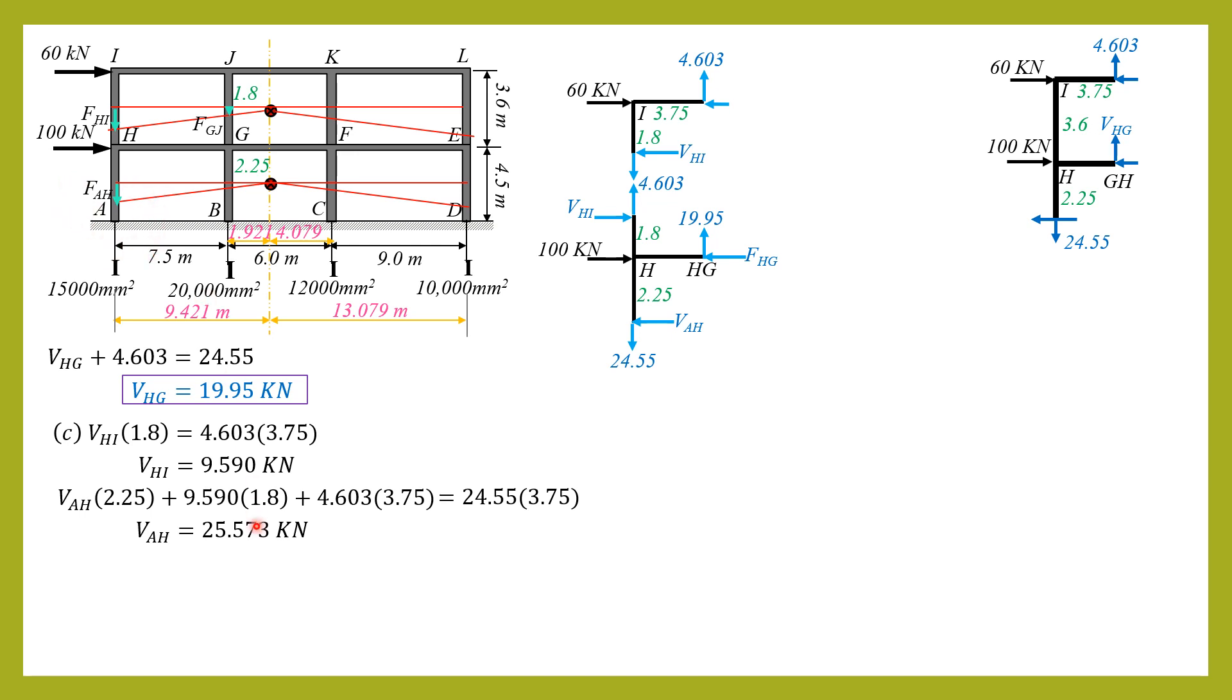And by action-reaction it is rightward, so the moment at a is counterclockwise and it is 25.573 times half of this column 2.25. So moment at a is 25.573 times 2.25. Again I am not drawing the FBD, it is clear. By action-reaction vh is rightward and we have a column here of height half of 4.5, so 2.25. So moment arm is 2.25. So moment at a is equal to 57.54 kilonewton meter counterclockwise, as compared to 60 kilonewton meter for portal method, so they're close.